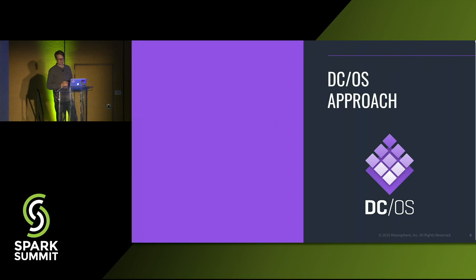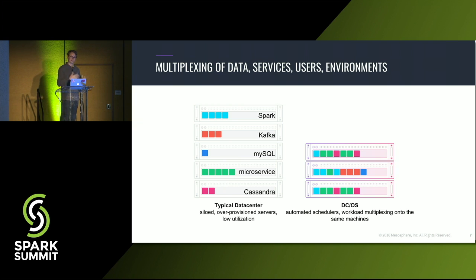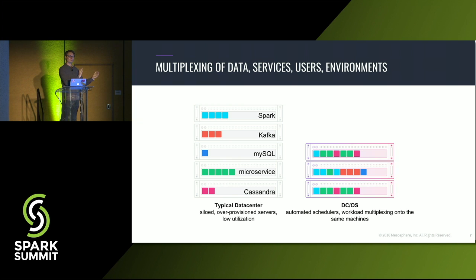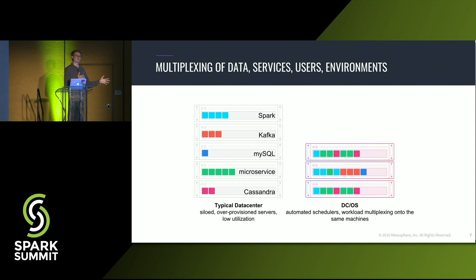Here's the DCOS approach to solving this problem. DCOS has a scheduler that schedules all the pieces of the SMAC stack — or any other container or data service you want to run — and basically multiplexes all these different tasks onto the same nodes. It does bin packing of all your application components until those servers are fully utilized. Servers might run Spark jobs as well as user-facing applications, or Spark jobs alongside databases or Kafka brokers. Automated schedulers drive up utilization, you have one way to run all applications from DCOS, and you move away from this model of building silos — no human has to decide where Spark, Kafka, or Cassandra goes.